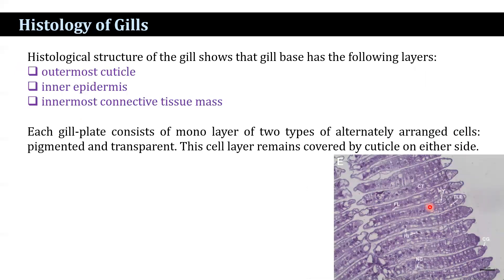If you examine the histological structure of the gill, it shows the following layers. The outermost layer is the cuticle, the inner layer is the epidermis, and the innermost layer is a connective tissue mass. Each gill plate consists of a monolayer of two types of alternately arranged cells: pigmented cells and transparent cells. These cell layers remain covered by the cuticle on either side. Histologically, each gill consists of three layers — the outermost cuticle on both sides and a connective tissue mass in the central layer.